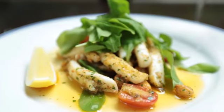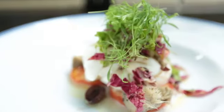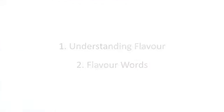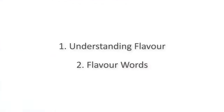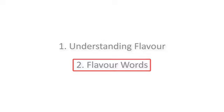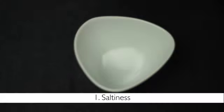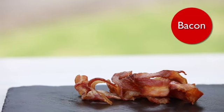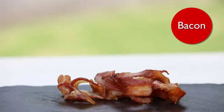There's a combination of other words that describe various flavours of a food. Firstly, we have saltiness. Saltiness is when you taste something which contains a fair amount of salt. Bacon is an example of a salty food.